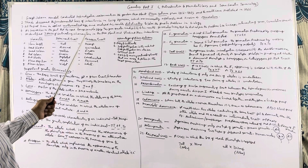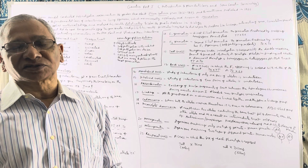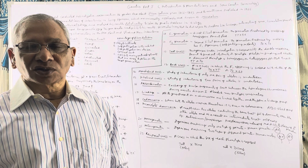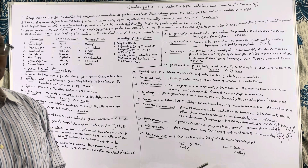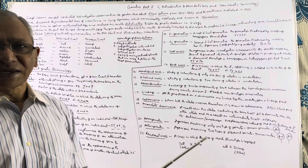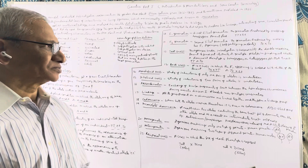Before Mendel, scientists also studied how characters are inherited from one generation to the next, but they could not succeed. Mendel succeeded because he applied, for the first time to the problems of biology, mathematical logic and statistical analysis. By applying these methods, he could understand how characters are inherited in living organisms.